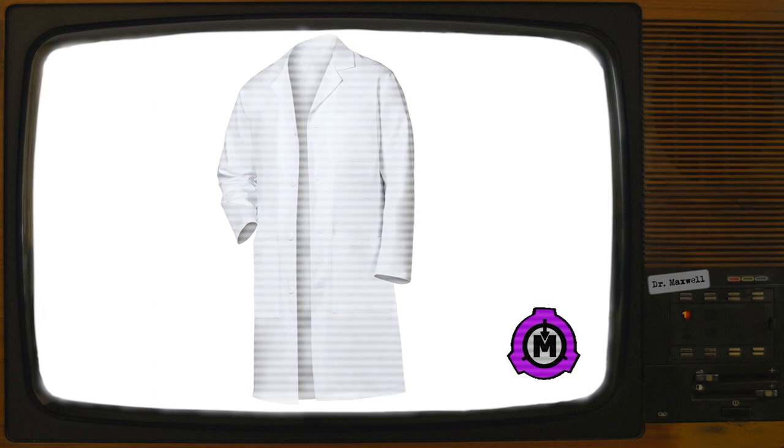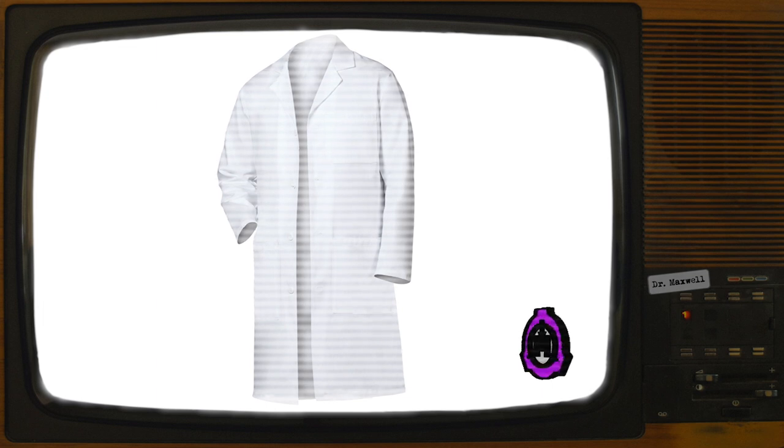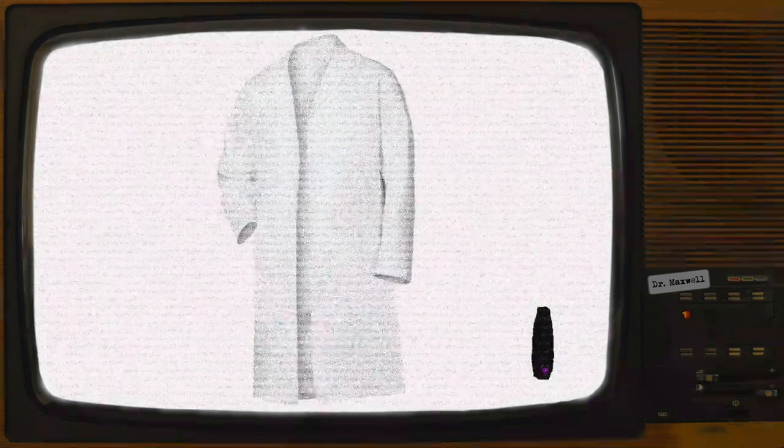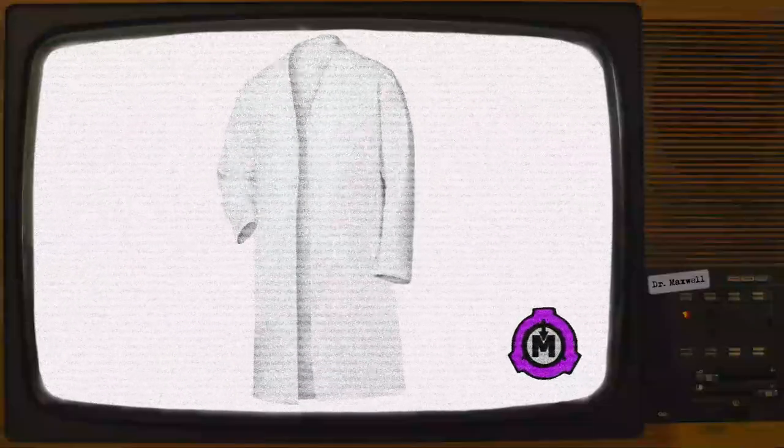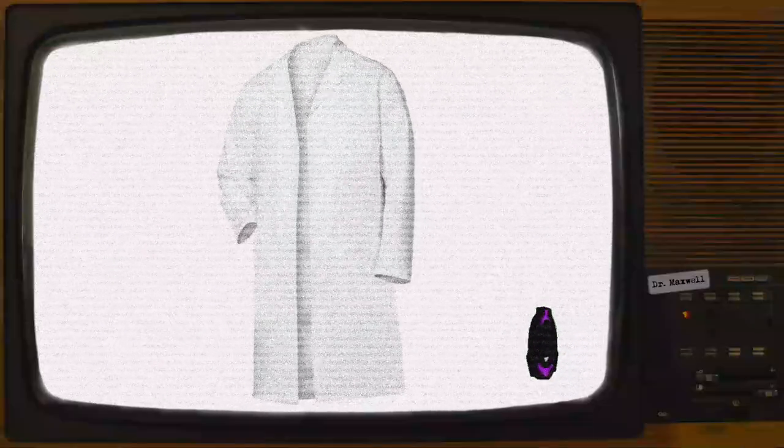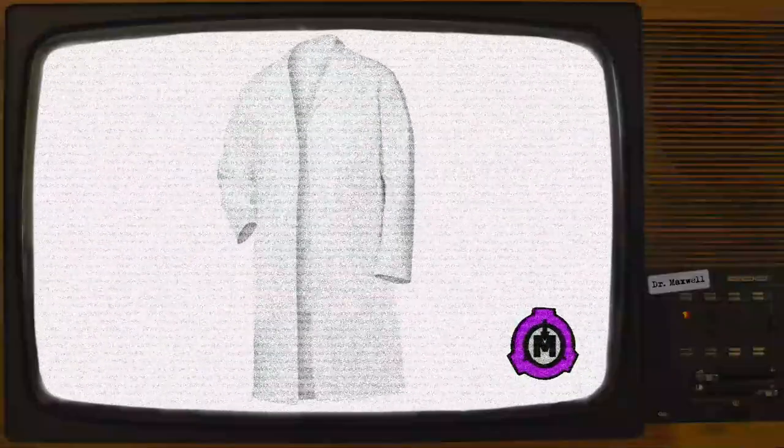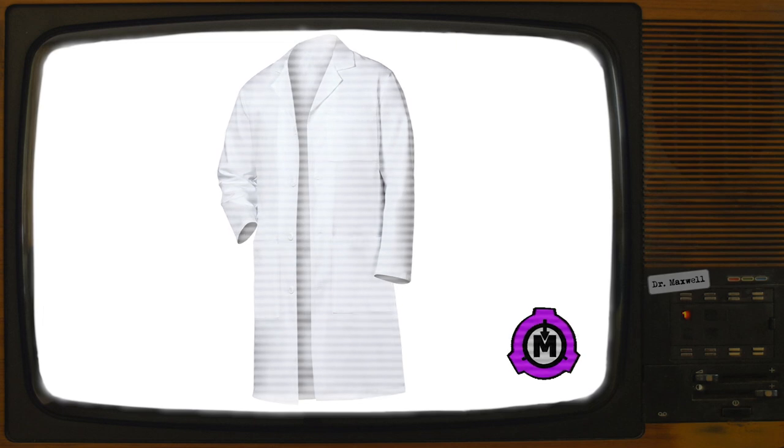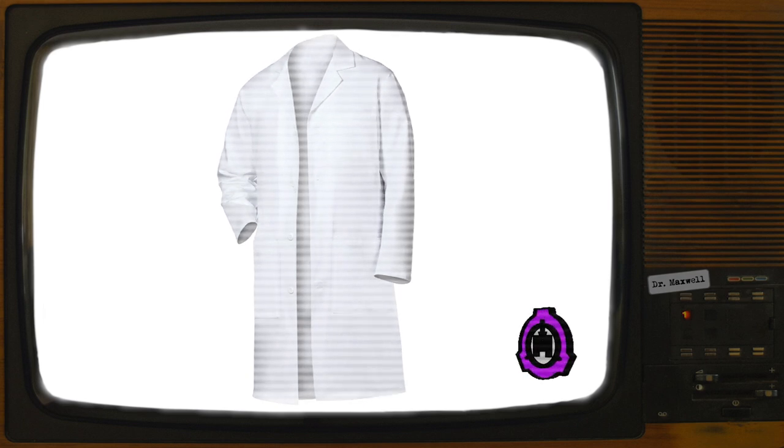Special Containment Procedures: SCP-1022 may be contained on a clothes rack within a standard secure item locker. Warning labels are to be affixed to prevent confusion with similar attire in use by Foundation personnel. Completion of a comprehensive psychiatric evaluation and the mandatory SCP-1022 orientation course is required for staff who wish to utilize SCP-1022. After the events of Incident 1022-1, use of SCP-1022 is restricted to D-Class barring approval by Level 4 personnel.